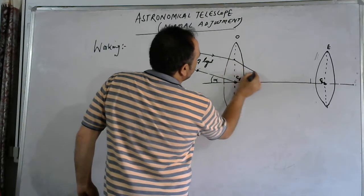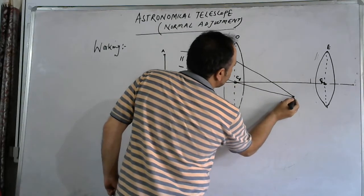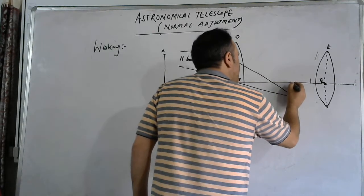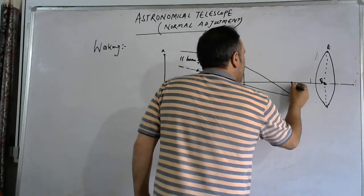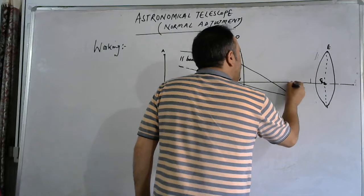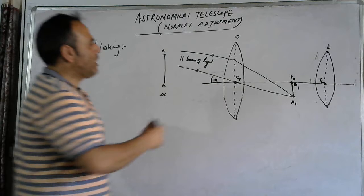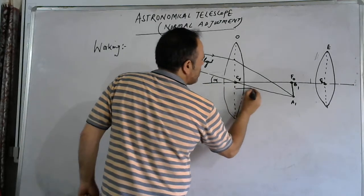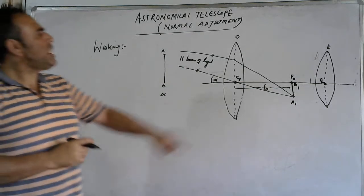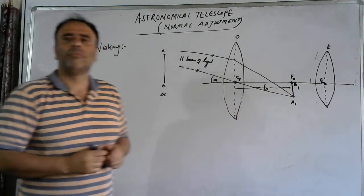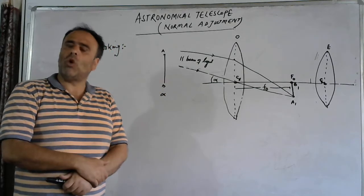The objective will make the image of this object as A1, B1 at its focus F0. This image A1, B1 is formed at the focus F0 of the objective, meaning the distance from the objective to this image is F0, that is the focal length of the objective. This image A1, B1 is real, inverted, and diminished with respect to the object lying at infinity.